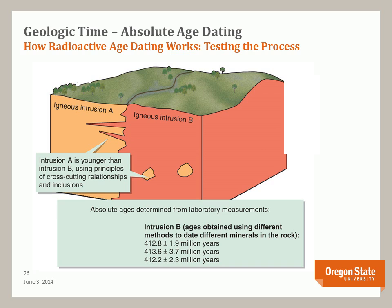Here is another test of radioactive dating. If we know the ages of two intrusions, we can determine that inclusions younger than intrusion B give us confidence that the age dating process is robust and accurate.